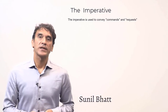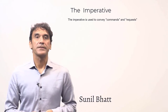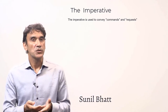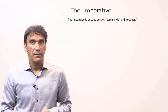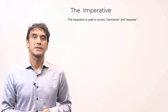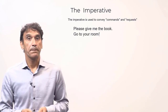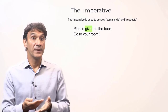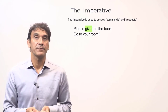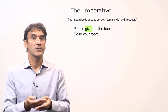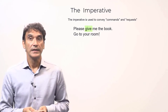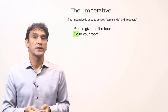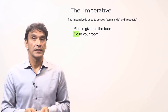The next grammar point is imperative. Imperative is a verb form that is used to convey a command or request. For example, in the sentence 'please give me the book,' the verb form 'give' is an imperative because it's a request. Similarly, in the sentence 'go to your room,' 'go' is a command — 'go' is an imperative form.